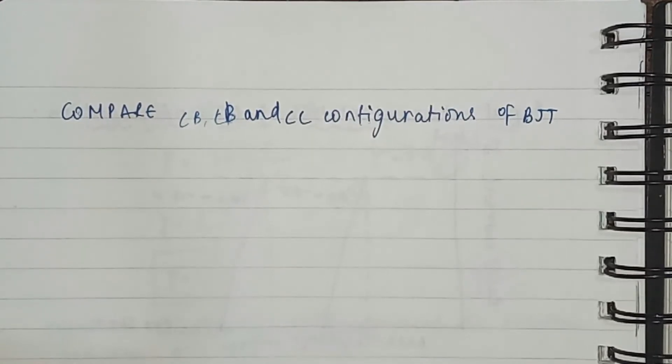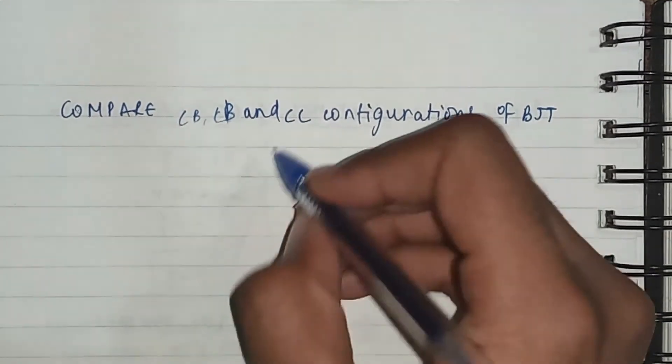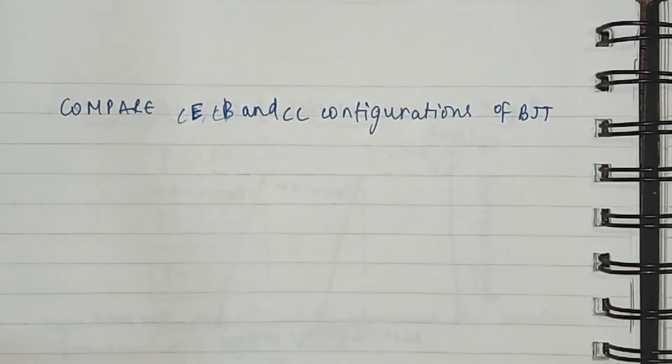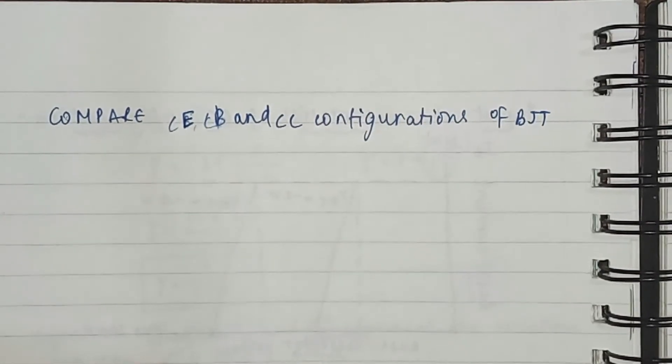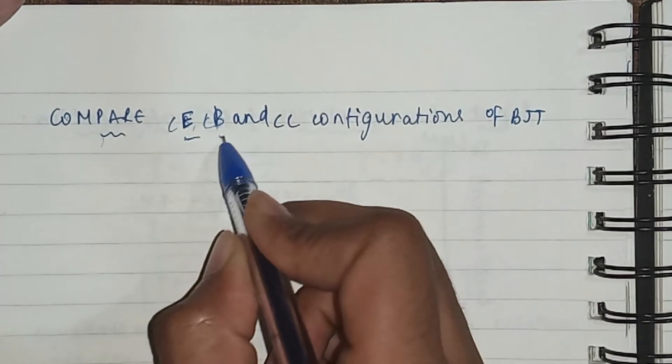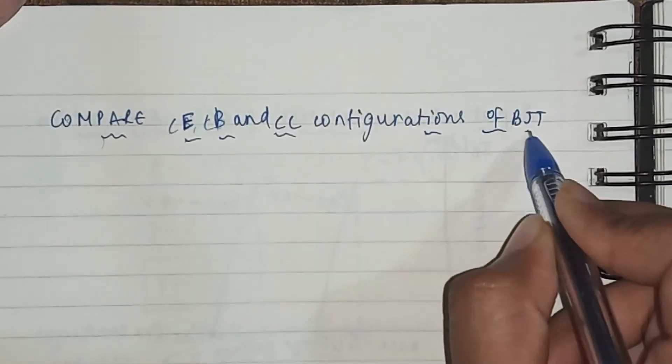Hello guys! In the previous video we discussed the CE, CB, and CC configurations in detail, their input and output characteristics and all. So in this video we are going to compare CE, CB, and CC configuration of BJT in brief.